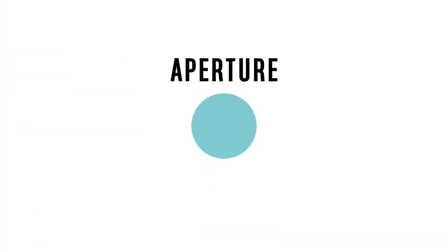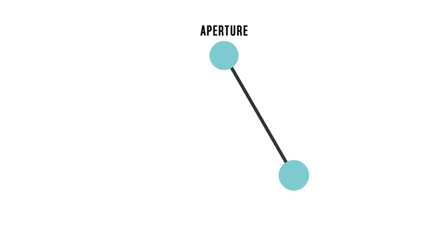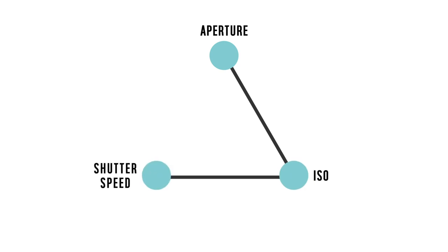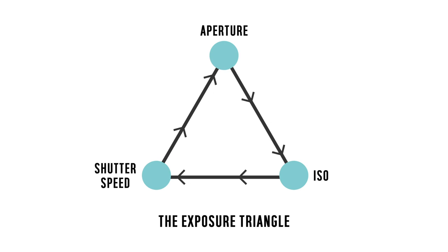There are three fundamental factors that are important for every photographer to understand, all of which affect the amount of light that goes into the camera and how the camera performs. These are: one, the aperture; two, the ISO number; and three, the shutter speed. They all work in tandem with each other and are therefore often referred to as the exposure triangle.